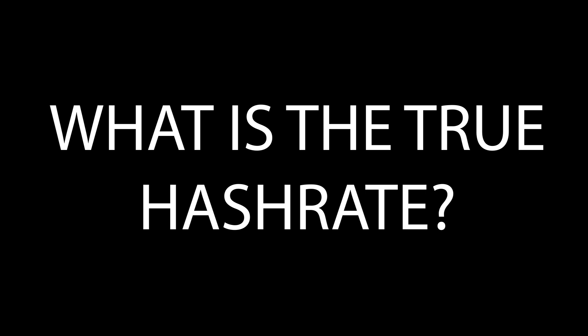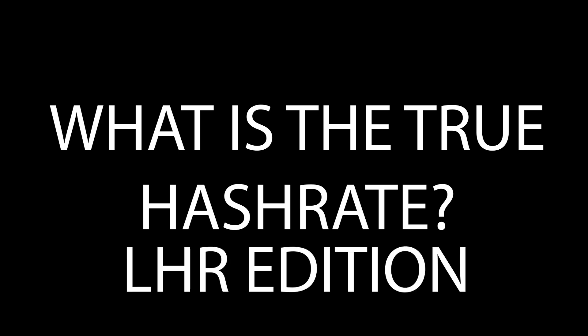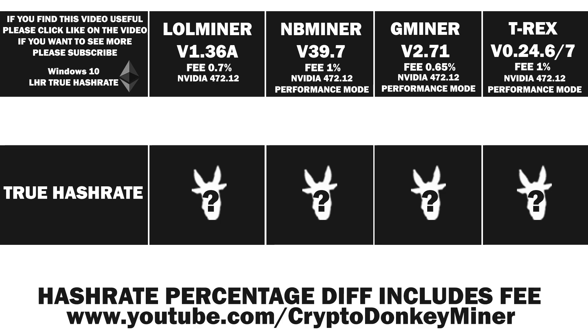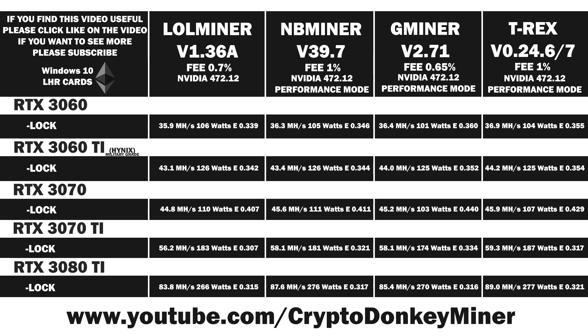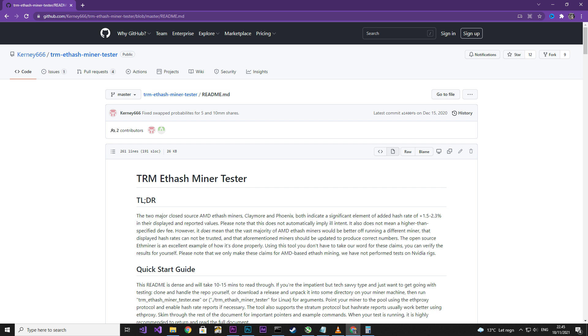Today we are going to answer the question: what is the true hash rate when using LHR Unlock Miners? We will be looking at LOD Miner, NB Miner, G Miner, and T-Rex. After we have found the true hash rate diff percentage, we will be applying it to all the previous results. We will be using ETHAS Miner Tester from TeamRed Miner to figure out the true hash rate diff percentage.